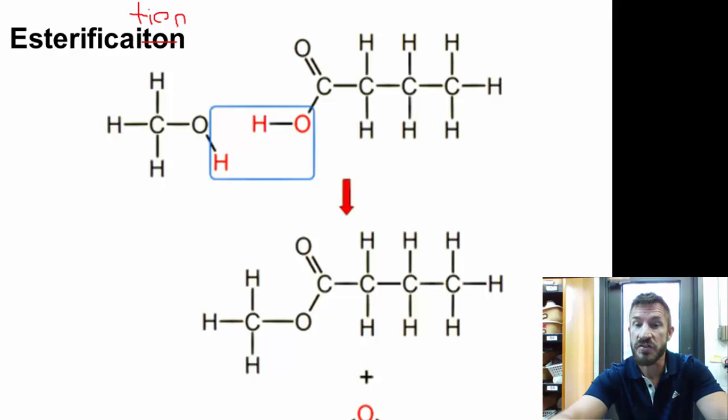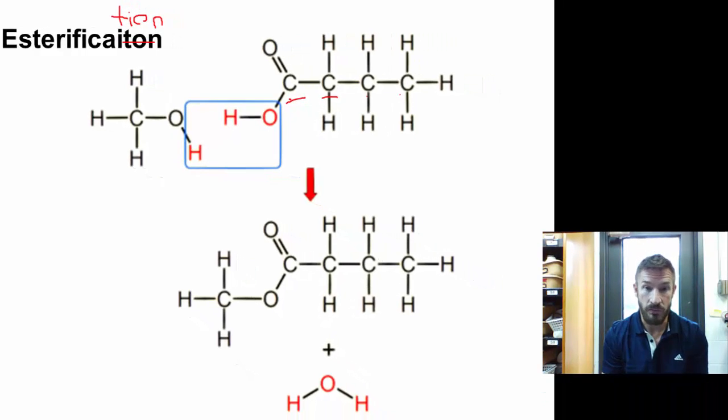And the butanoate comes from butyric acid. You notice we have four carbons here across. We have one, two, three, and then four carbons. So, this is butanoic acid. What happens when these combine, you lose a water molecule. This is what's called a dehydration synthesis.